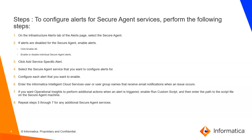By following these steps, you can easily configure alerts for the Secure Agent services. On the Infrastructure Alert tab of the alert page, select the Secure Agent. If the alerts are disabled for the Secure Agent, enable the alerts. Then select the Secure Agent service you would like to configure alerts for. In today's demo, we would be selecting the data integration service.